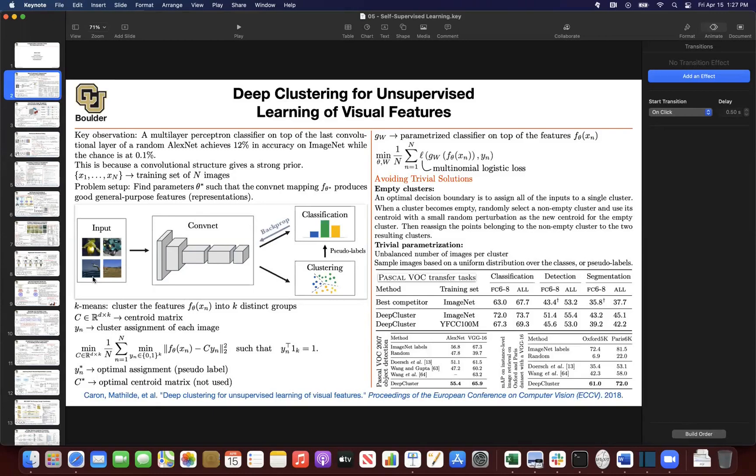One idea that we started with was take your images, push them through your convolutional neural network, cluster those features or featurized images, use the cluster assignments for each data point and each image to give you the labels or pseudo-labels, and then do back propagation and do the usual classification loss.